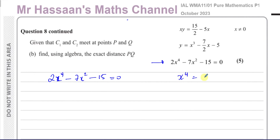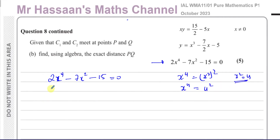x to the power of 4 is the same as (x squared) squared. So if we let u equal x squared, then x to the power of 4 becomes u squared. Replacing x to the power of 4 with u squared and x squared with u gives something that looks like a familiar quadratic.